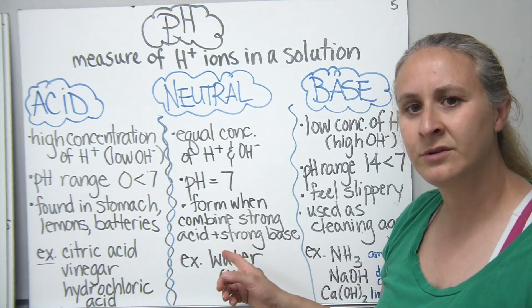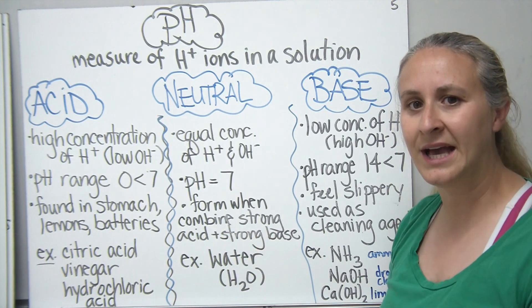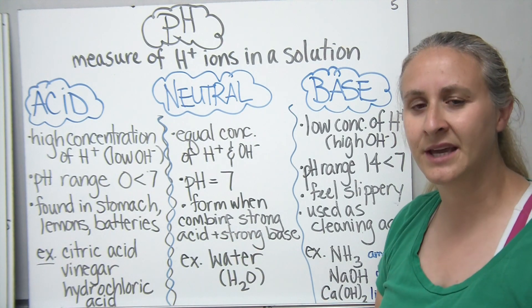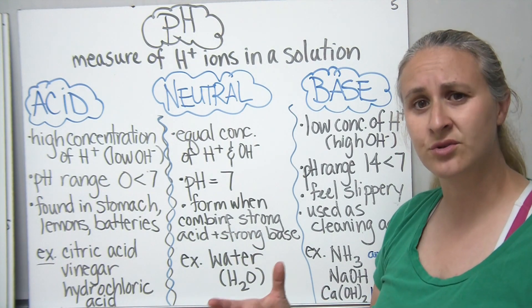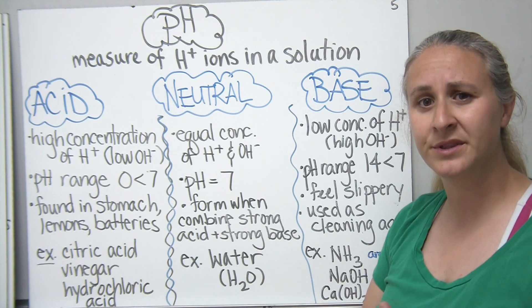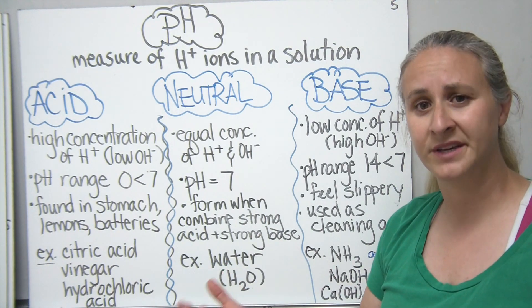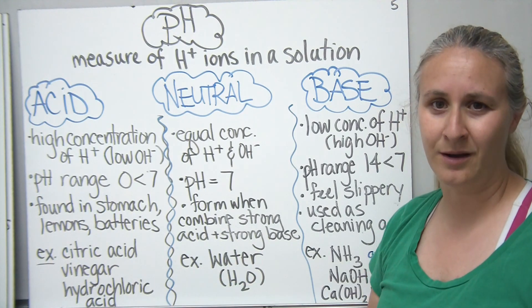The definition of a neutral compound is one that has equal concentrations of hydrogen and hydroxide or OH ions. Typically, our neutral compounds are going to form when we combine a strong acid and a strong base together.